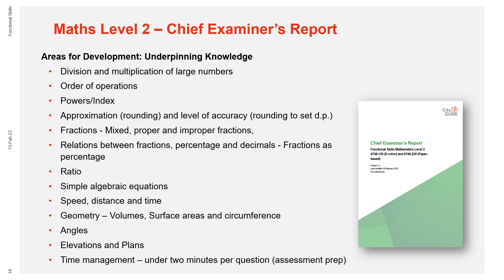In the Level 2 Chief Examiner's report, it is noted that many candidates performed calculations using basic operations successfully and statistical problems were often dealt with competently. However, when it comes to underpinning knowledge questions, there were a large number of candidates for whom areas of development included division and multiplication with large numbers including negatives and decimals, the order of operations (BIDMAS), misunderstanding of powers and index, approximation such as rounding and level of accuracy, rounding to a set number of decimal places, and fractions — that's mixed, proper and improper fractions — were still a challenge.